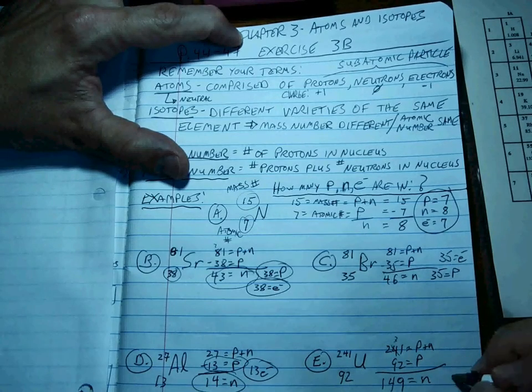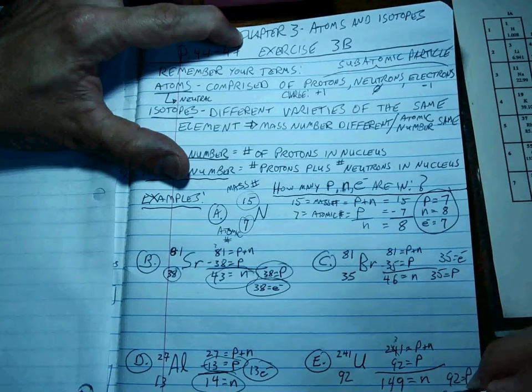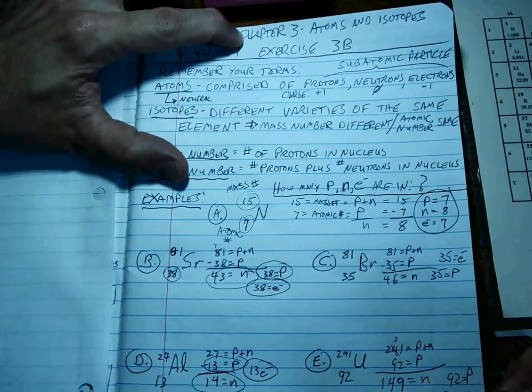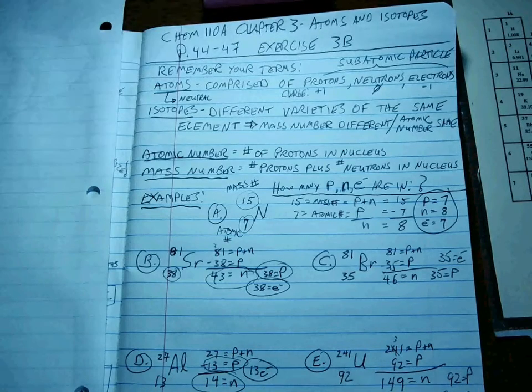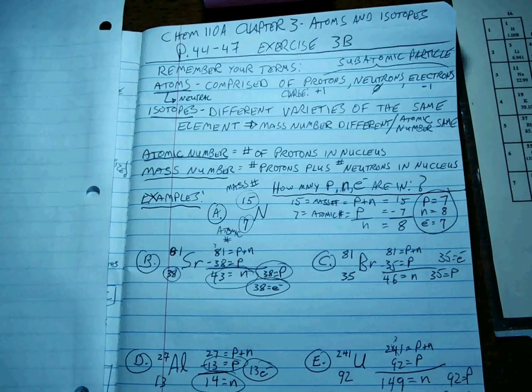Okay. 149 neutrons. 92 protons. 92 electrons. Easy peasy, lemon squeezy. Practice a bunch of these. Shouldn't take you hardly any time at all, and you'll have them down pat.